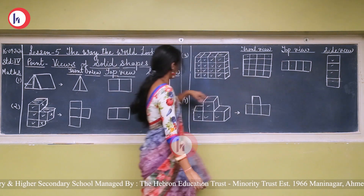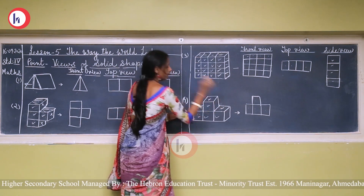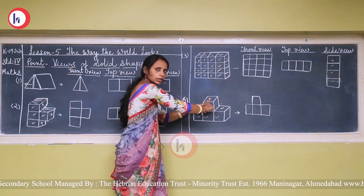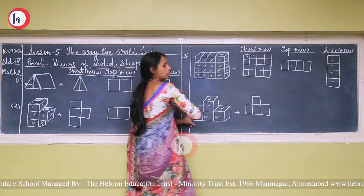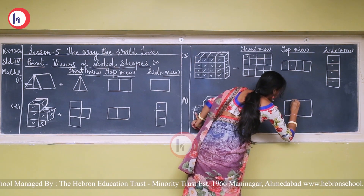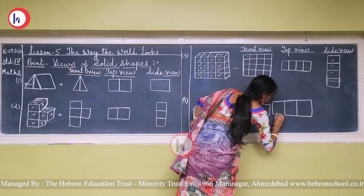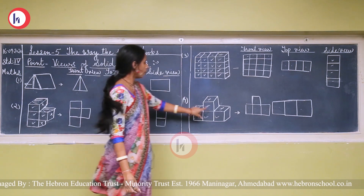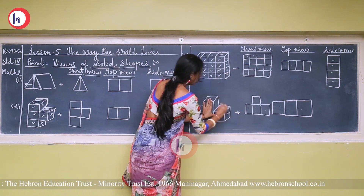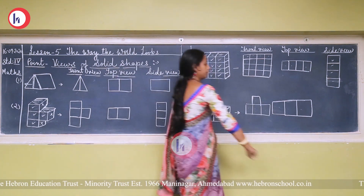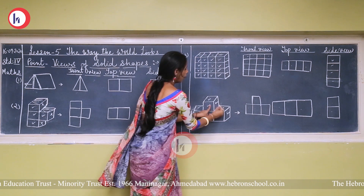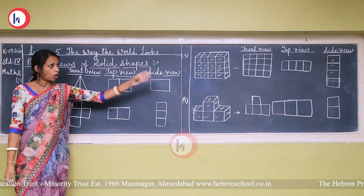Whenever we draw the top view, from the top we see 1, 2, and 3 parts. From this cube we can see only this part, from these two cubes we see this part, and here only this part — so 3 squares for the top view. Now the side view — from the side, there are 1 and 2 cubes visible, so we draw 1 square and 2 squares. In this way we can draw the front view, top view, and side view.